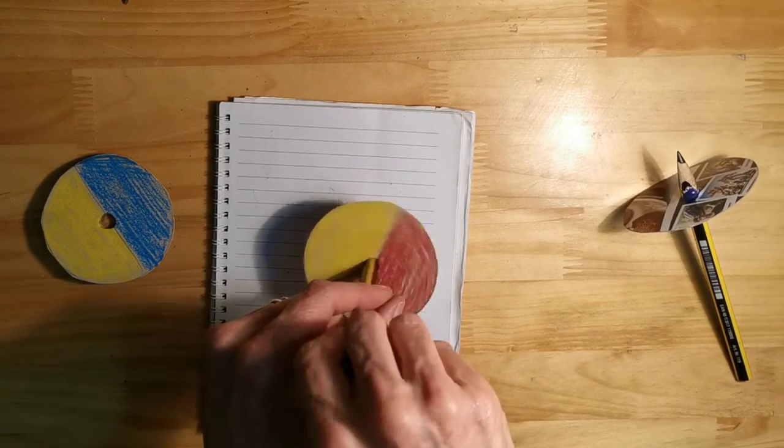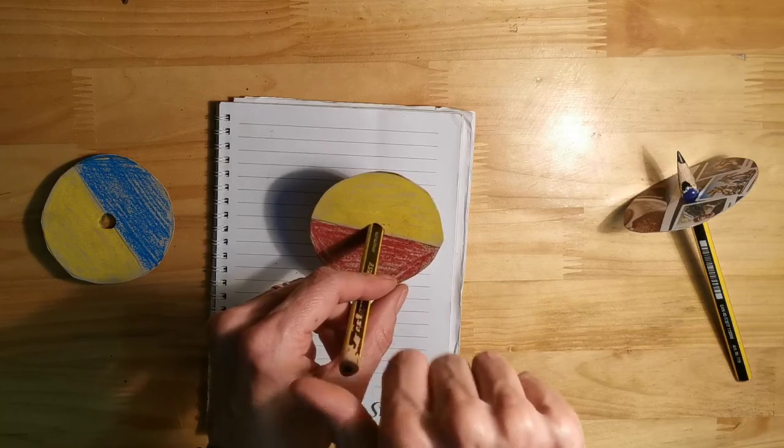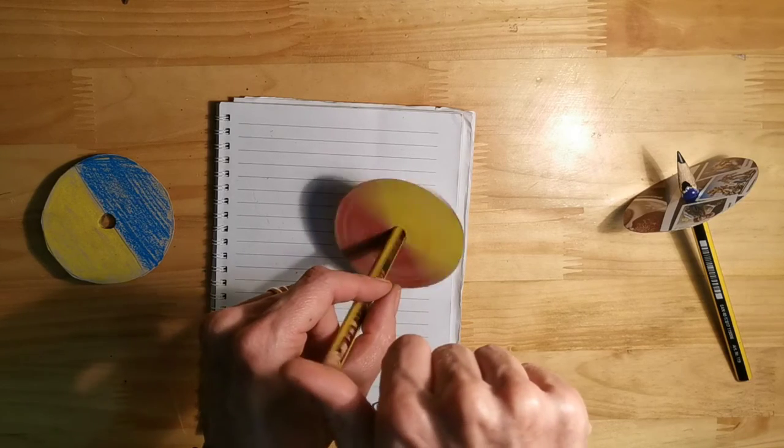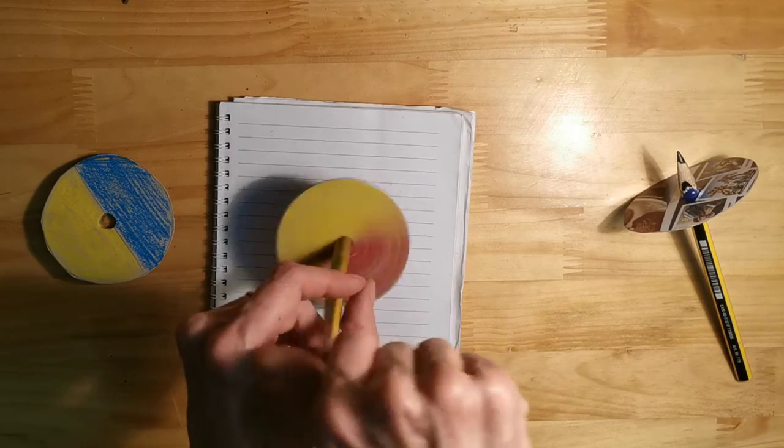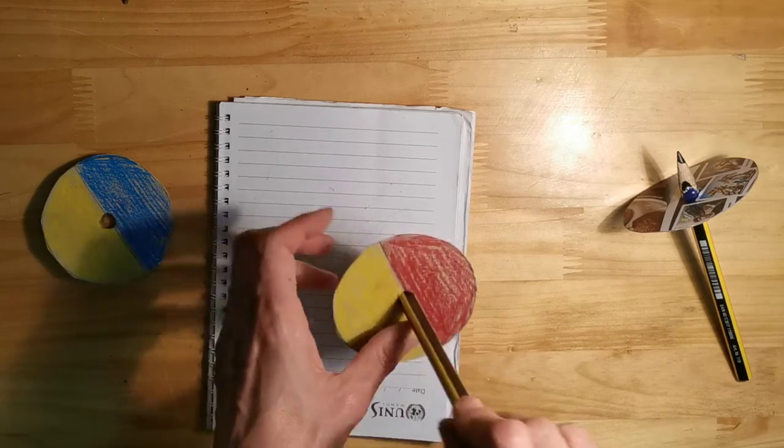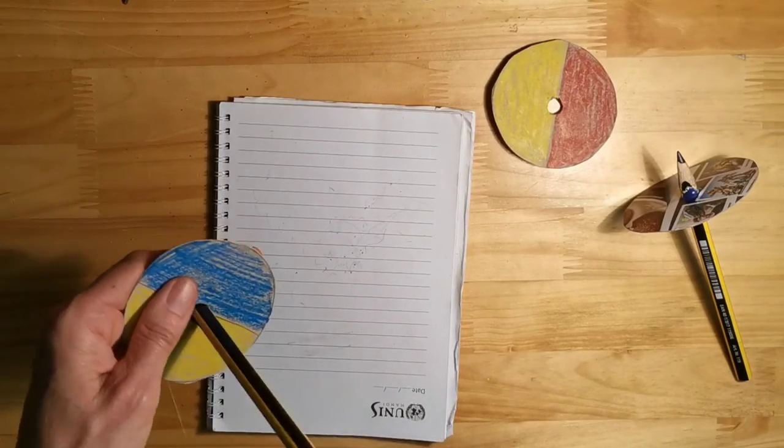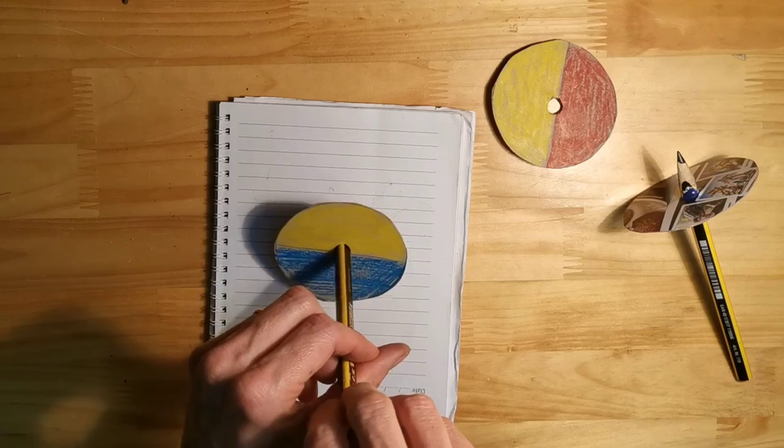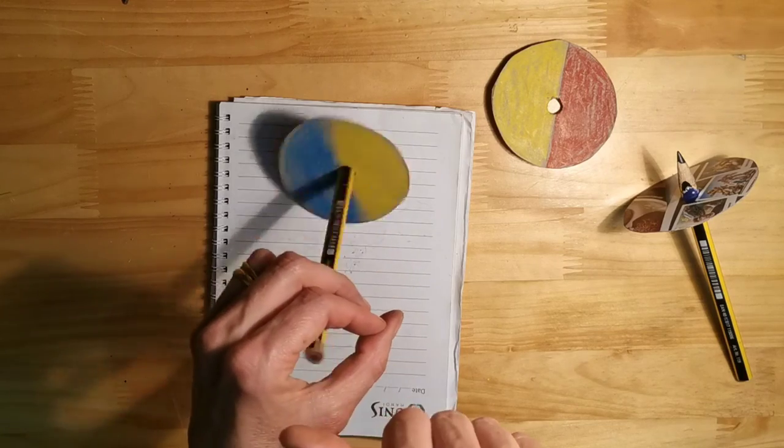When you mix yellow and red it makes orange. That one's a bit easier to see. There you go, you can see the orange. And hopefully you can see when you mix blue and yellow it makes green.